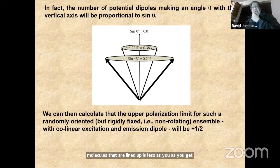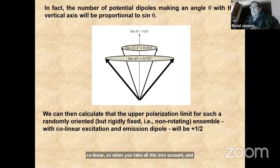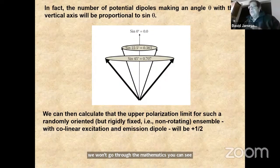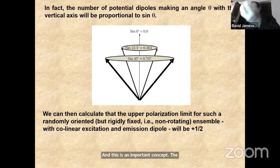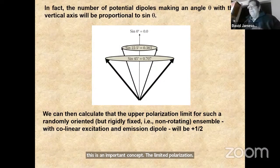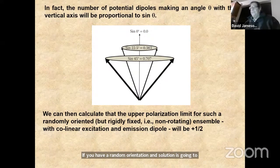Consider how many molecules are excited: fewer molecules are perfectly aligned than those at an angle — think of a globe where there are many more molecules near the equator than near the North Pole. Taking all this into account, the limiting polarization for a randomly oriented solution is 0.5. Only in a crystal where everything is fixed can you get higher; in solution with random orientation it will be one half, assuming the emission dipole is parallel to the absorption.